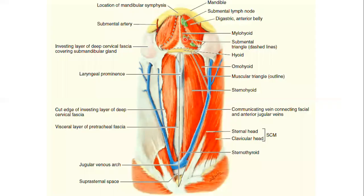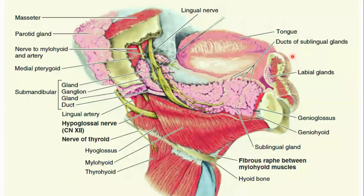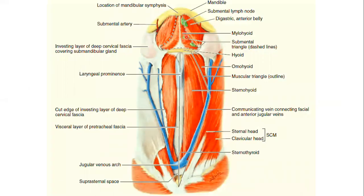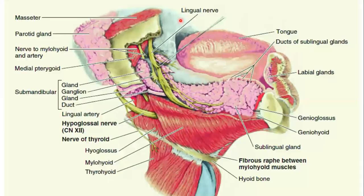The mylohyoid is forming the floor of the submental triangle. Along with the hyoglossus, the mylohyoid also forms the floor of the mouth — we will discuss this in a further lecture. You can identify the mylohyoid and the hyoglossus in these diagrams. Also identify the hypoglossal nerve here, which we will talk about very soon.